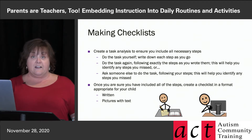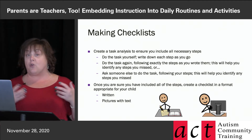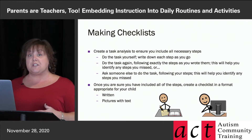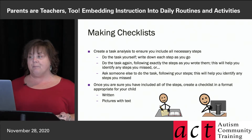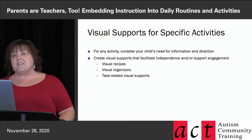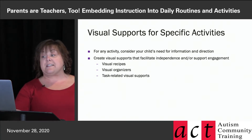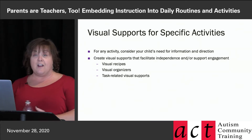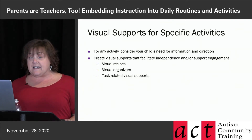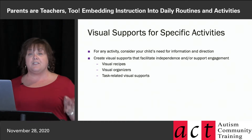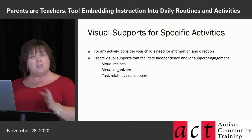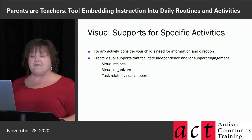It could be just written if your child reads and understands it, or you can use pictures with text. We'll talk about sources where you can access pictures later. You can also look at visual supports for specific activities — any activity you can make visual supports for. Check out the visual support strategy workshop at Autism Videos at ACT if you're looking for more ideas.